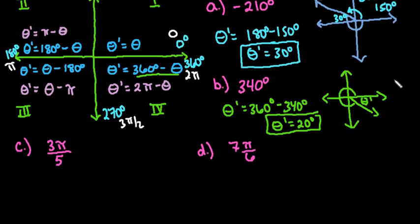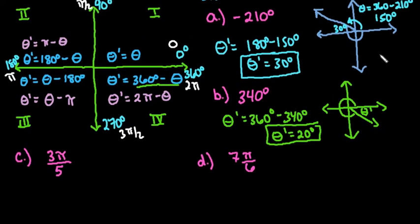Alright, last two are given in radians, just so that you can see an example with radians. 3 pi over 5 is not quite, so if you think about this in terms of fractions, it makes it a little bit easier. 5 fifths would be pi, so 3 fifths would be in quadrant 2. So if we draw out a picture to help us see where we are, 3 pi over 5 would end up being in quadrant 2.